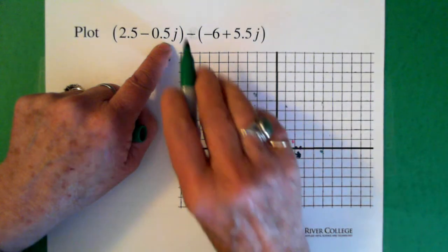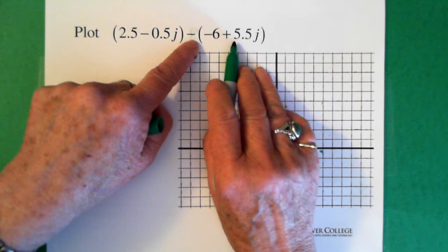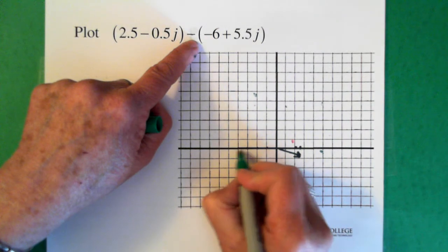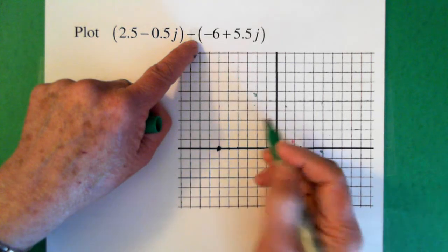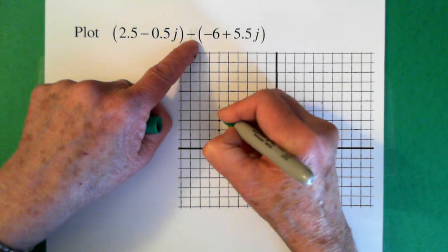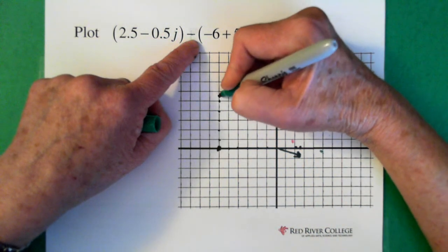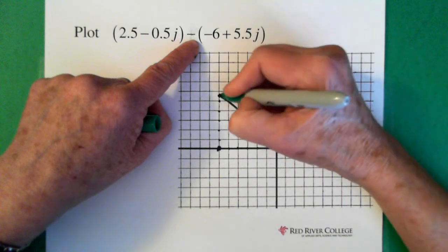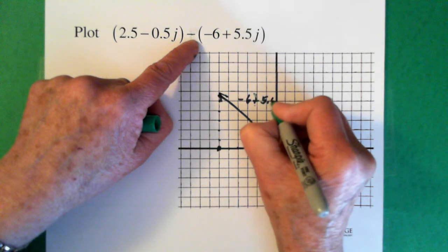And we're subtracting minus 6 plus 5.5j. So minus 6 — we're going in this direction: 1, 2, 3, 4, 5, 6. And up 5.5j: 1, 2, 3, 4, 5 and a half. So this vector — I probably need a ruler — is here. That's minus 6 plus 5.5j.